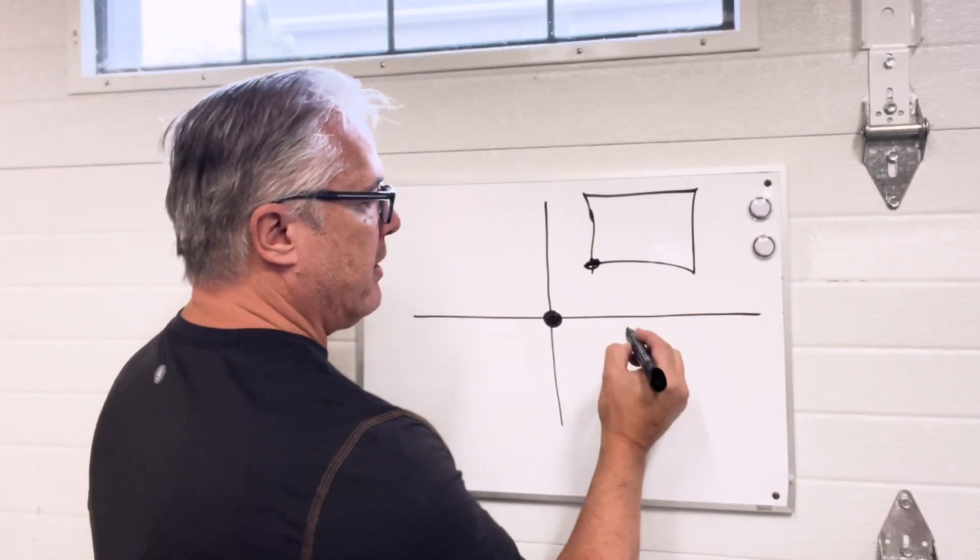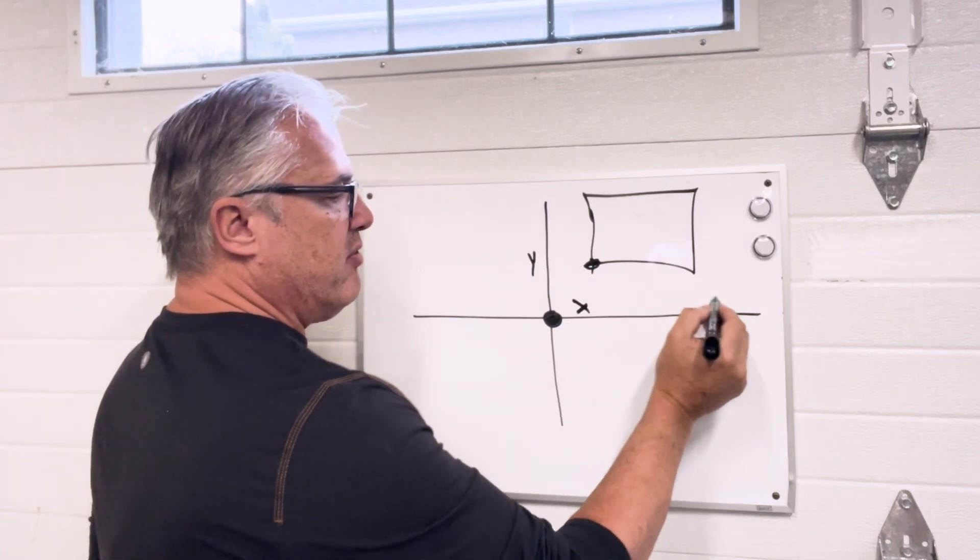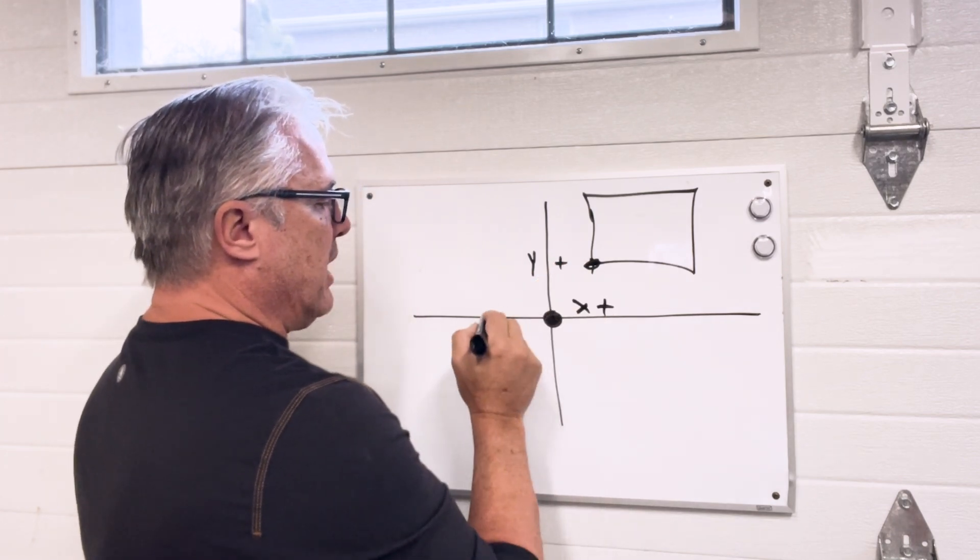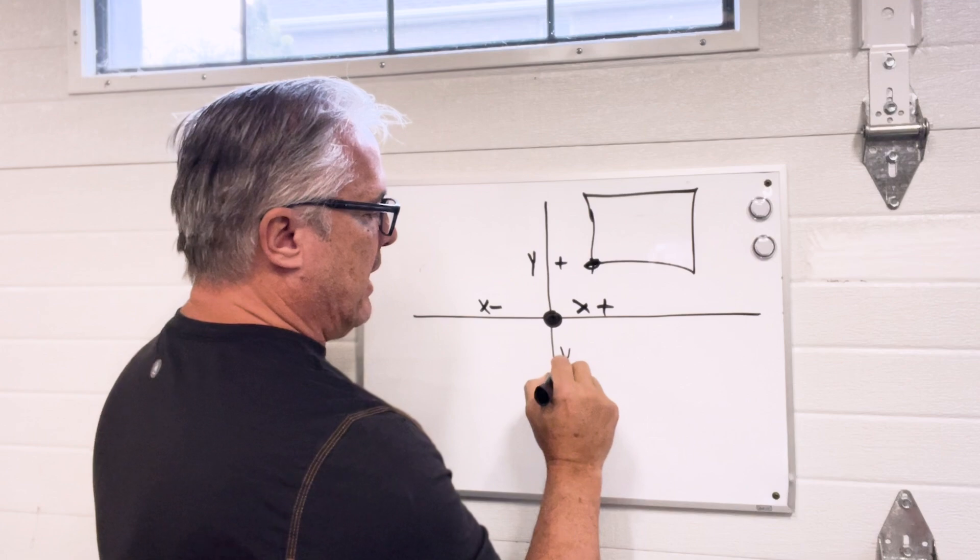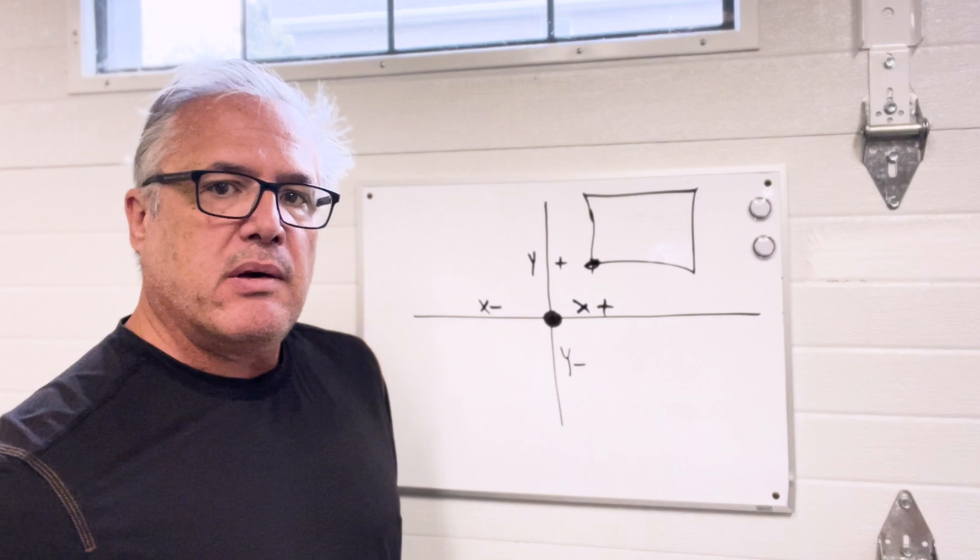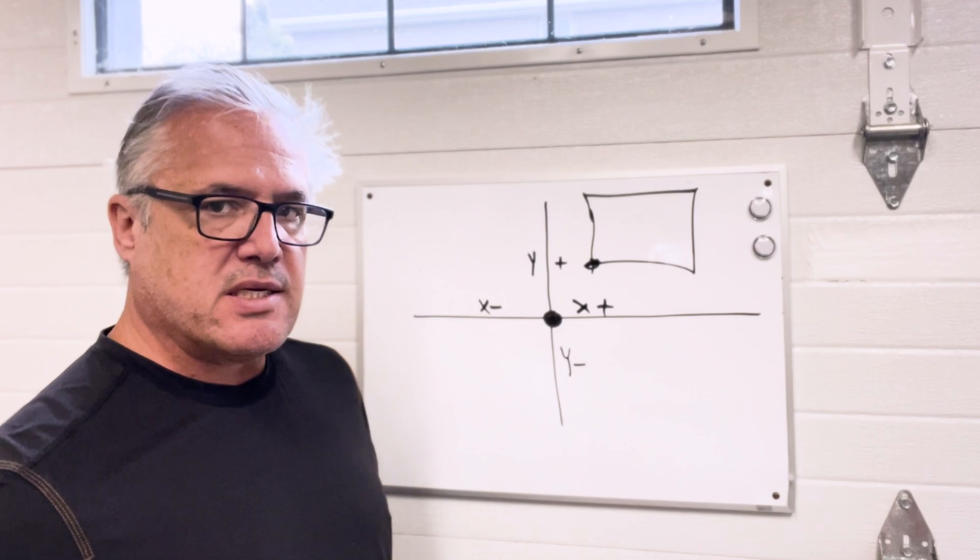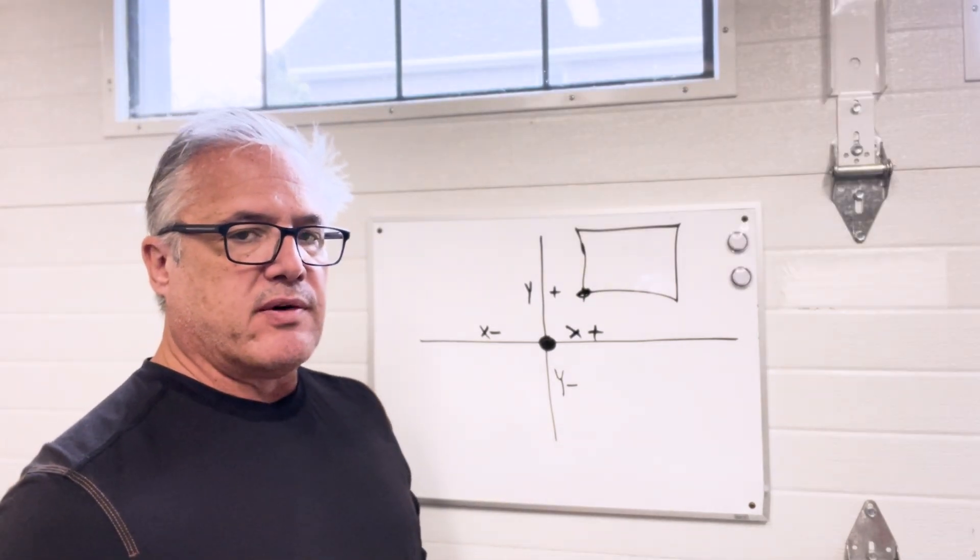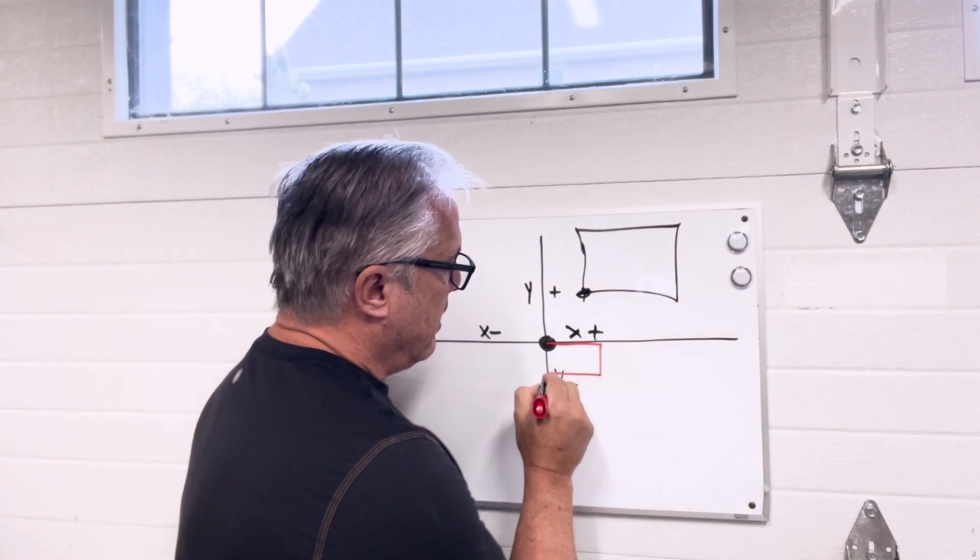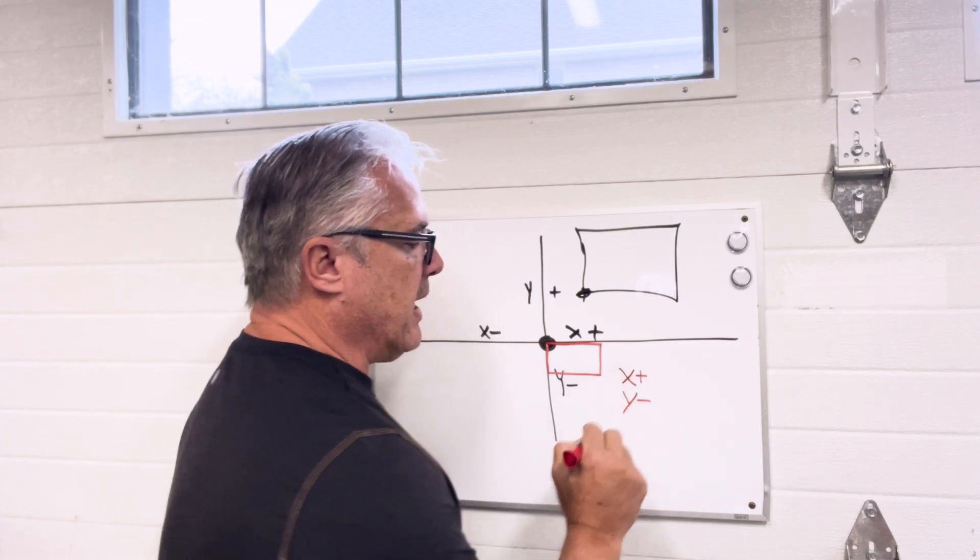If we were to look on the Cartesian grid, this is our x-axis and our y-axis. So any movement over here would be x plus, y plus, going this way would be x negative and here would be y negative. Most of the time we're going to be programming in this quadrant, but when we're creating components for the vertical table, we're going to change that. So when we're programming for the parts on the vertical table, we are going to be creating a part here, which is in the x plus y negative grid.